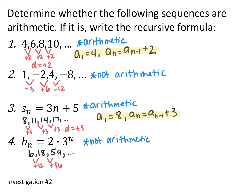The next two sequences are written in explicit formula form, so I just found the first few terms. For 3n plus 5, plugging in 1 through 4 gives 8, 11, 14, 17 — we're adding 3 every single time, so this is arithmetic with a common difference of plus 3. Recursive formula: a sub 1 equals 8, a sub n equals a sub n minus 1 plus 3. For the last one you get 6, 18, 54 — you add 12 then 36, so this is not arithmetic.